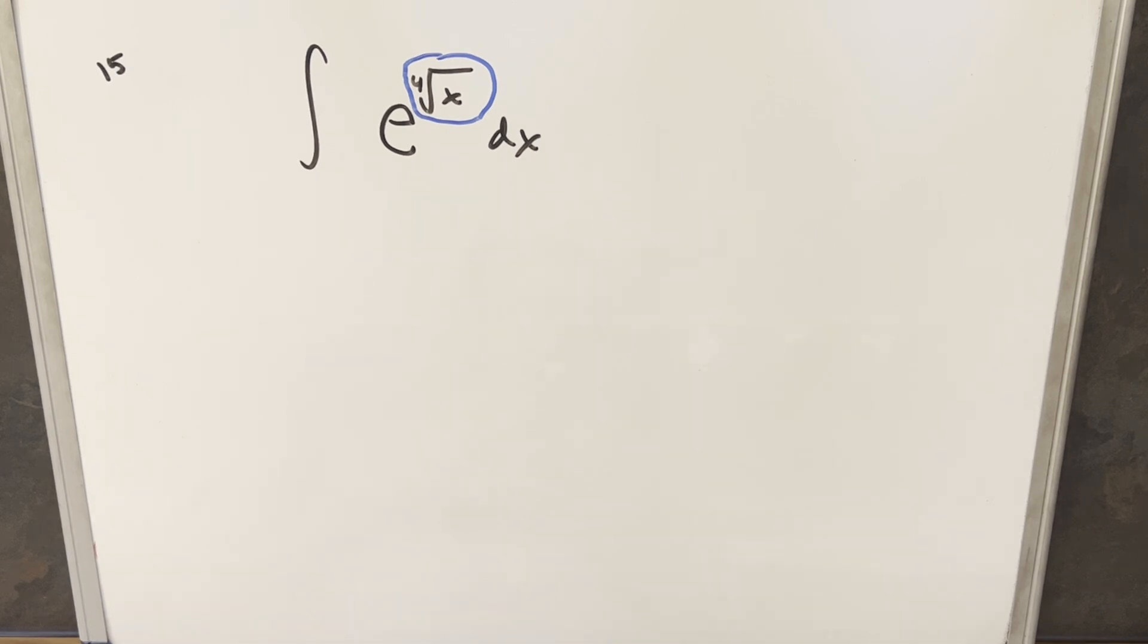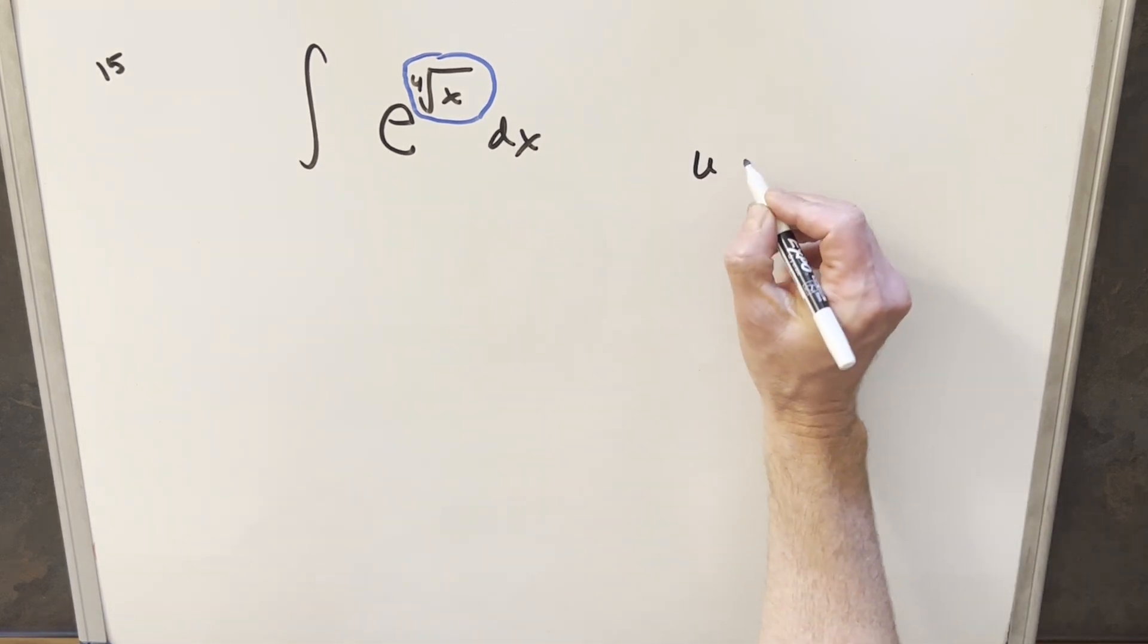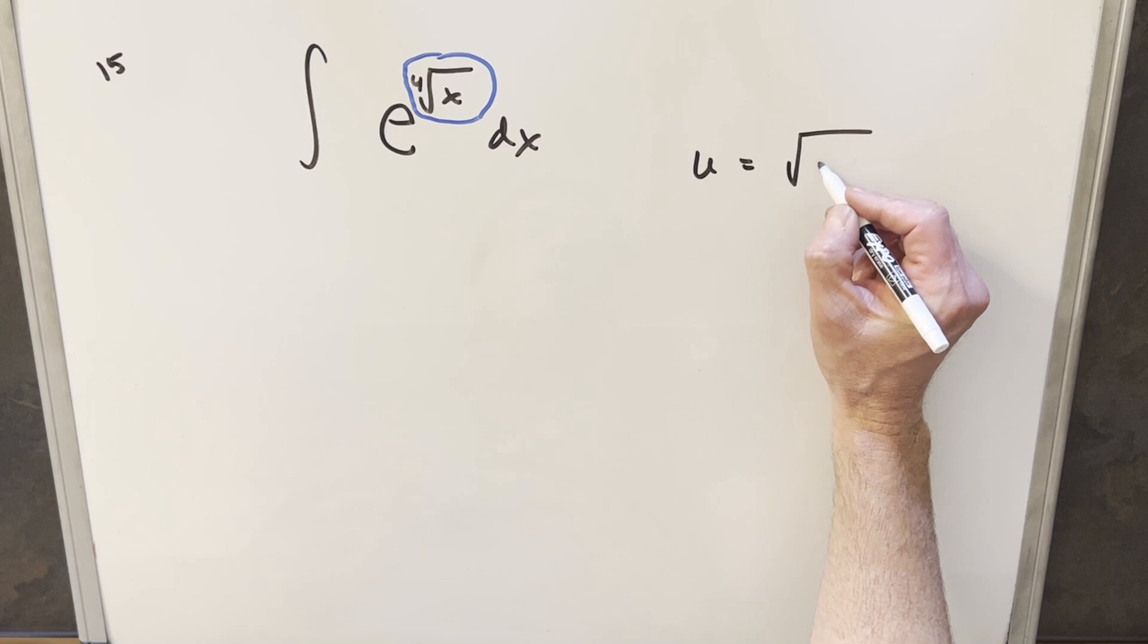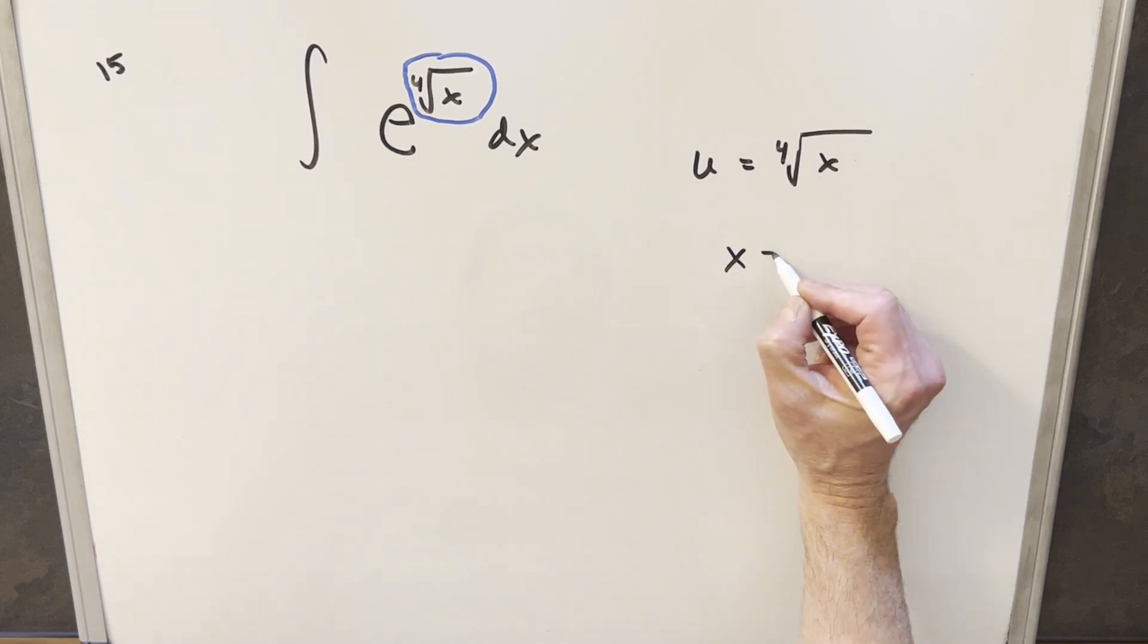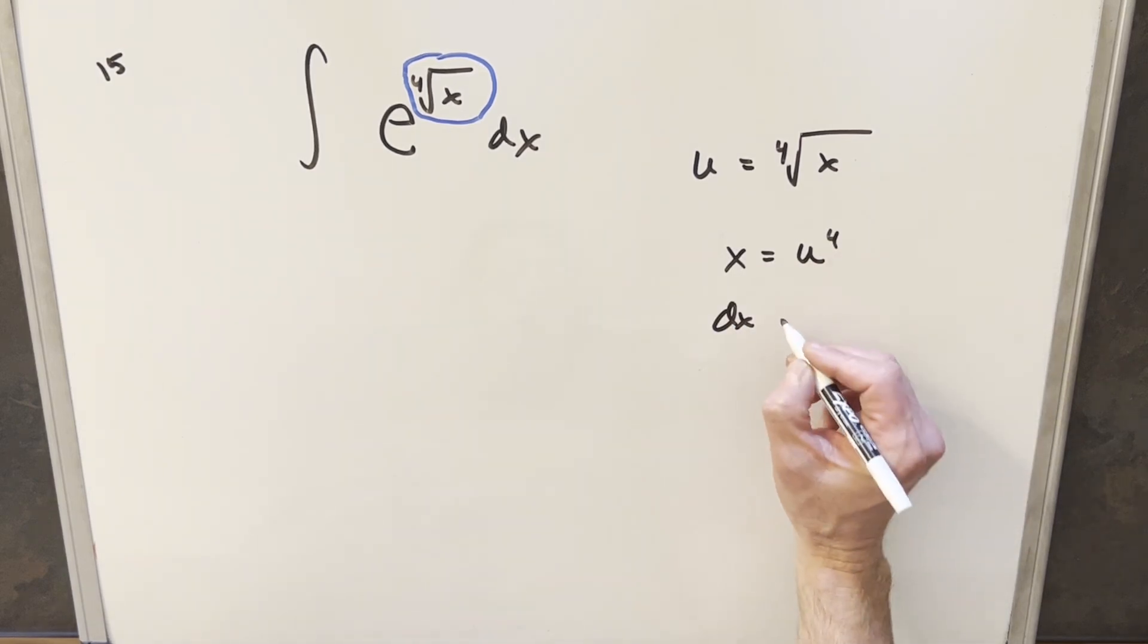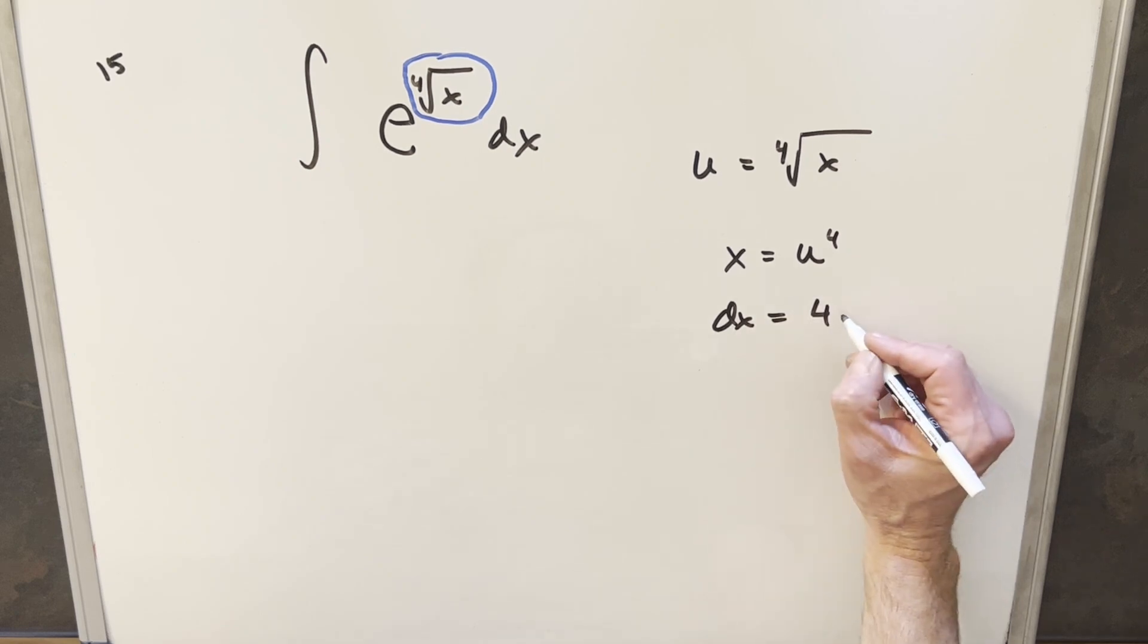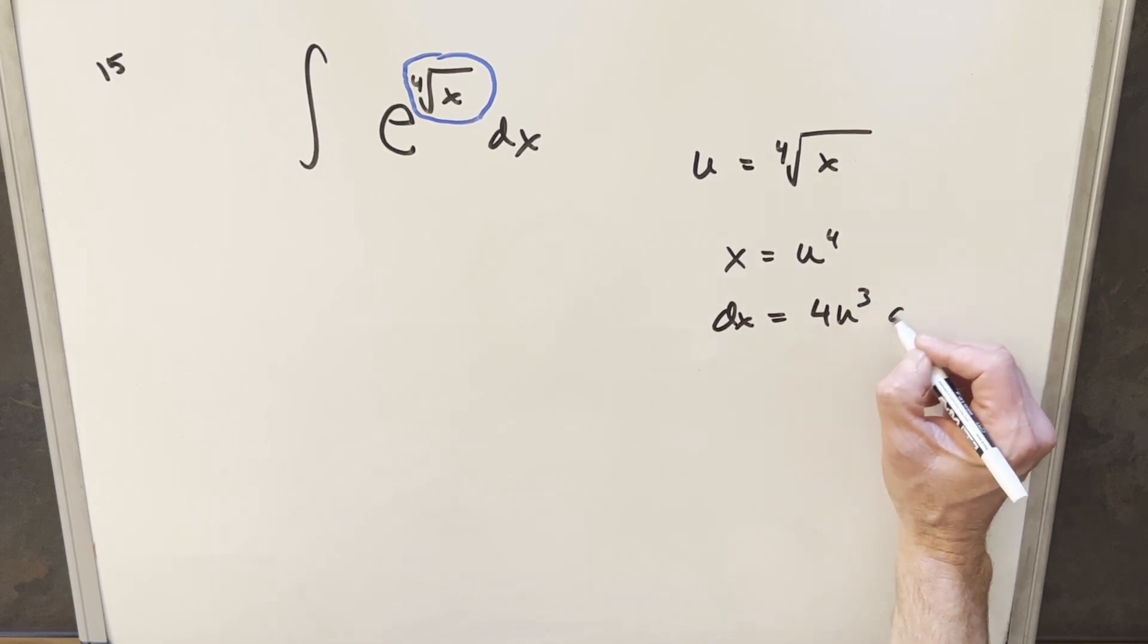So let's just do a u substitution for this. I'm going to set my u equal to the fourth root of x. And now let's just solve for x. So if I take it to the fourth power on both sides, we're going to have x equals u to the fourth. I'll take a derivative here to get a dx value. So we're going to get dx is equal to 4u cubed du.